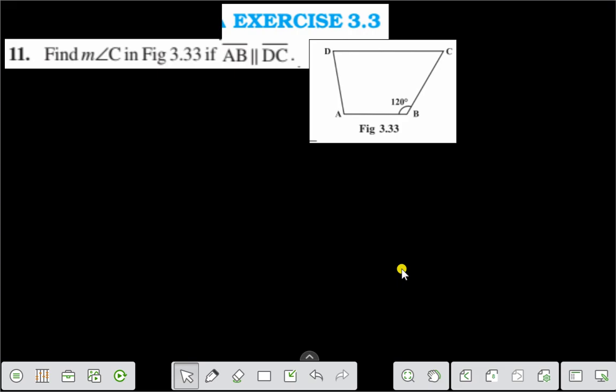Hello everyone. Today I shall discuss exercise 3.3 question number 11. Find measure of angle C in figure 3.33 if AB is parallel to DC.